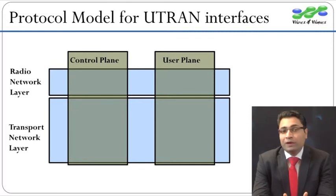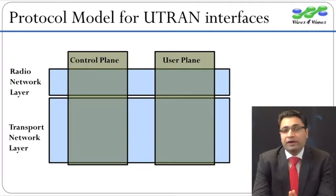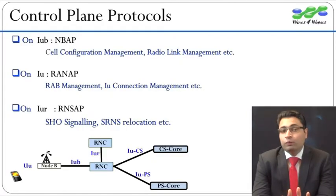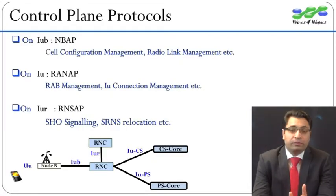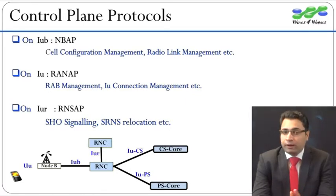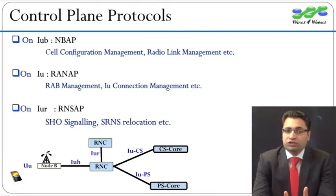The transport technology could be either ATM or IP. 3GPP has defined these layers to be completely independent of each other. The control plane includes application protocols like RANAP, RNSAP and NBAP, which are pure signaling protocols.